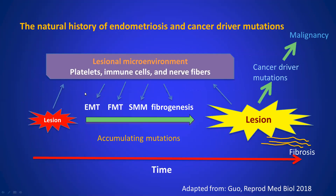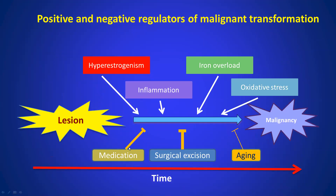This is the natural history of endometriosis. Once established, the lesion interacts with various cells within the lesional environment. These cells undergo epithelial-mesenchymal transition, fibroblast and myofibroblast transdifferentiation, smooth muscle metaplasia, and fibrosis. At the same time, they accumulate mutations. If they accumulate enough cancer driver mutations of the right type, eventually that would finish the molecular transformation. But counter-balancing mechanisms keep the lesion in dormancy: surgical excision removes these lesions, and aging slows down the replication rate.